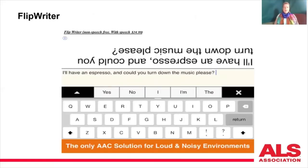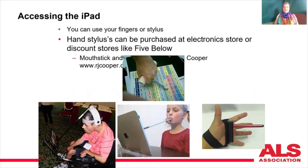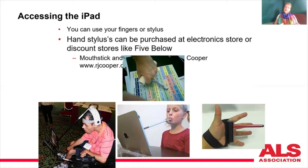There's an app called Flip Writer — it's nice if you're out to eat or in a coffee shop and want a private conversation. The user types and the person across the table can see what they're typing. When it comes to accessing the iPad, you can use your fingers or a stylus. There are many different styluses out there, including mouth or head styluses. If you go to an ALS clinic, you can ask your occupational therapist for recommendations.